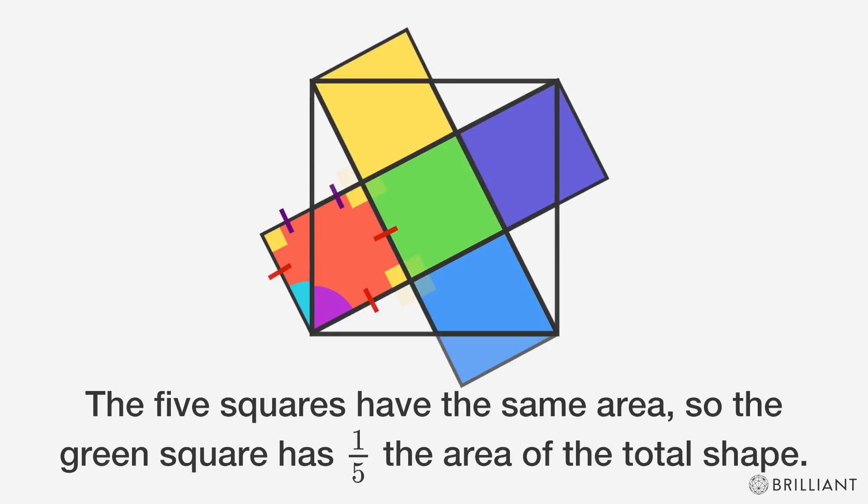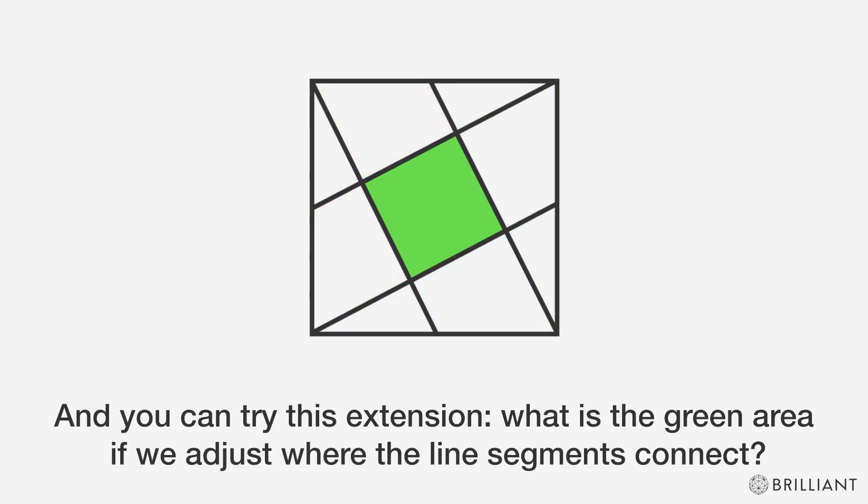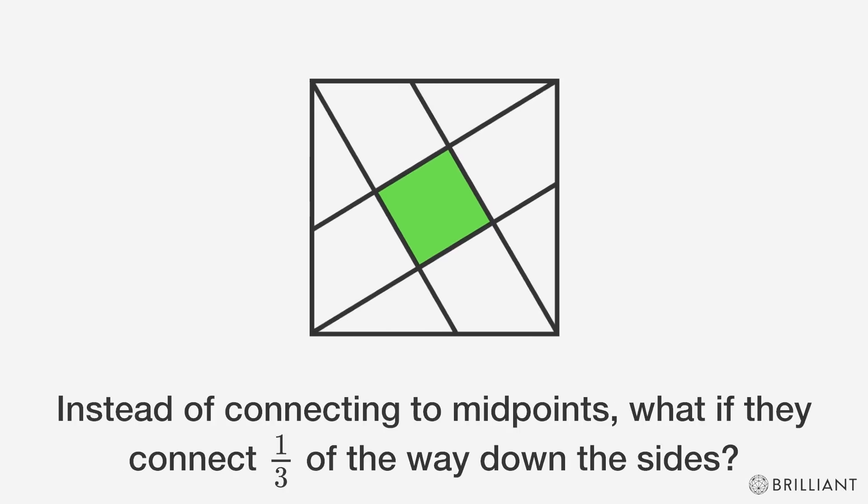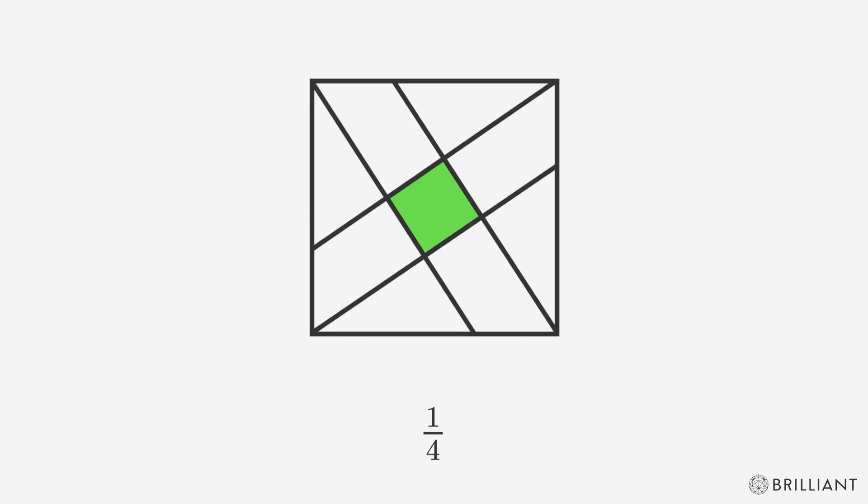The five squares have the same area, so the green square has a fifth area of the total shape. And you can try this extension. What is the green area if we adjust where the line segments connect? Instead of connecting to midpoints, what if they connect a third of the way down the sides? Or a fourth?